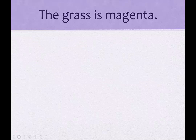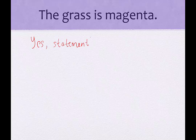Our first example: "The grass is magenta." Is that a sentence that could be either true or false, but not both? Yes, it is. So we would say that this is a statement. This particular statement we might declare is a false statement, but it doesn't matter — it didn't ask us whether it was true or false, just whether it's a statement. So yes, this is a statement.